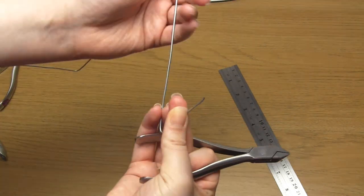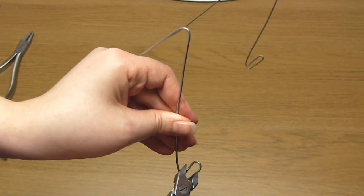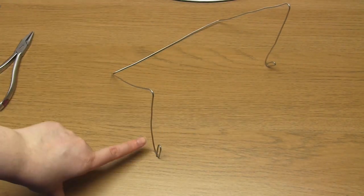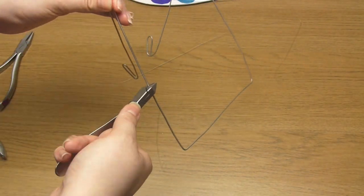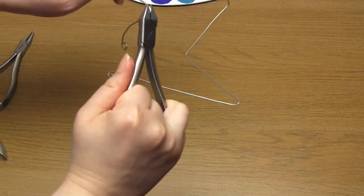Try and make sure that as much of the stand as possible is hidden behind the clock, and also think about the angle that you want the clock to be held at. Then the excess wire is bent backwards on both sides to form the back of the stand that rests on the table.